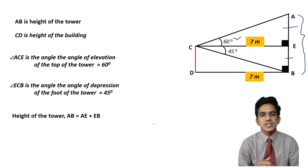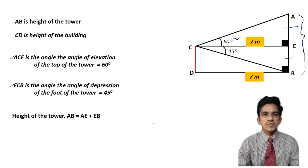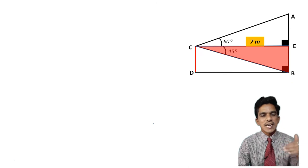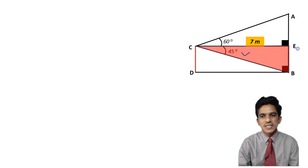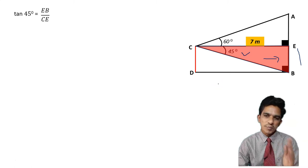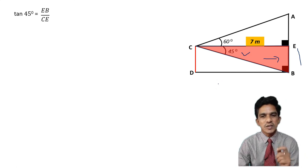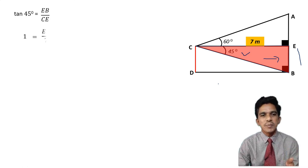This problem is split into two parts. First, consider the bottom triangle BCE. In triangle BCE, the angle at C is 45 degrees. EB is the opposite side and CE is the adjacent side. Taking tan 45: tan 45 = EB / CE = EB / 7. Since tan 45 = 1, we get EB = 7 meters.